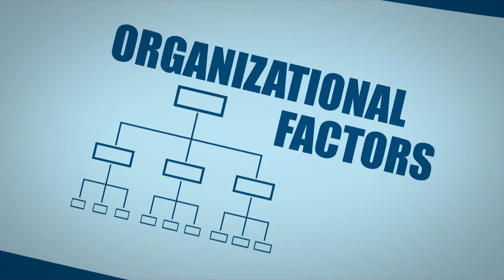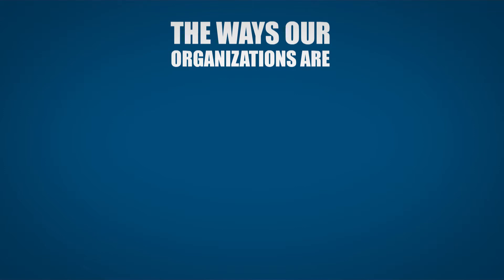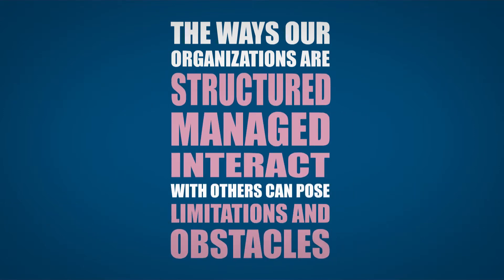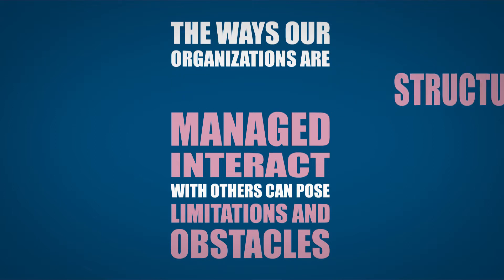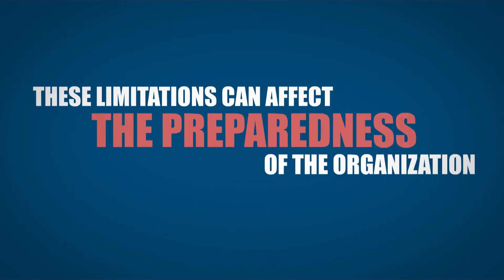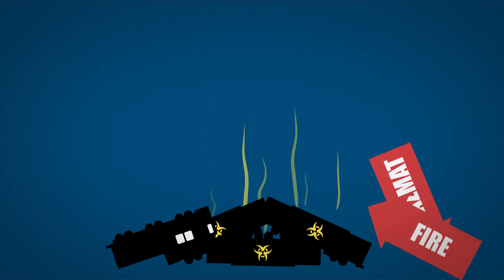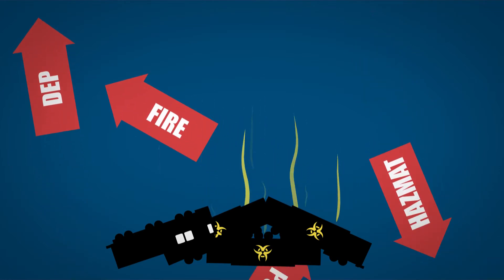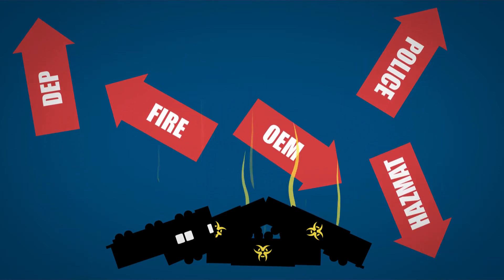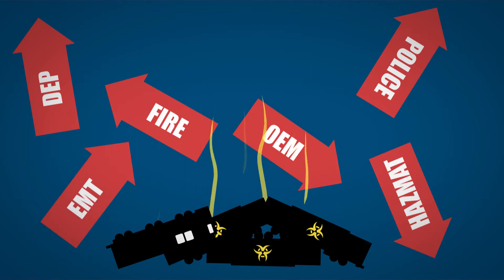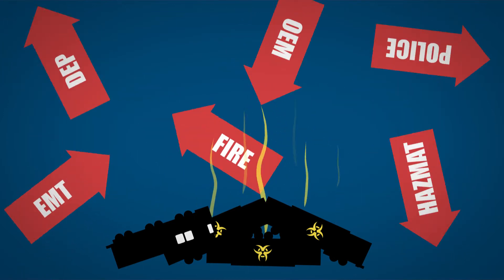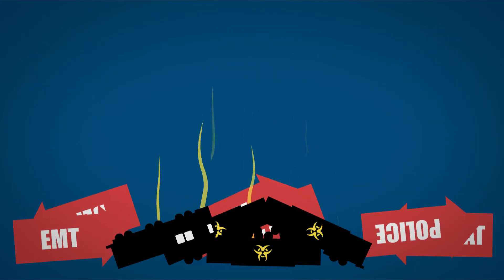The second cause for strategic risk is organizational factors. The ways that our organizations are structured, managed, and interact with others can pose limitations and obstacles, whether the organization is public or private, small or large. These limitations can affect the preparedness of the organization. In a disaster like the freight train example, multiple agencies would respond. But if those agencies have not shared their disaster procedures, that lack of communication could result in conflicting operations and the possible endangerment of agency personnel or even the public.